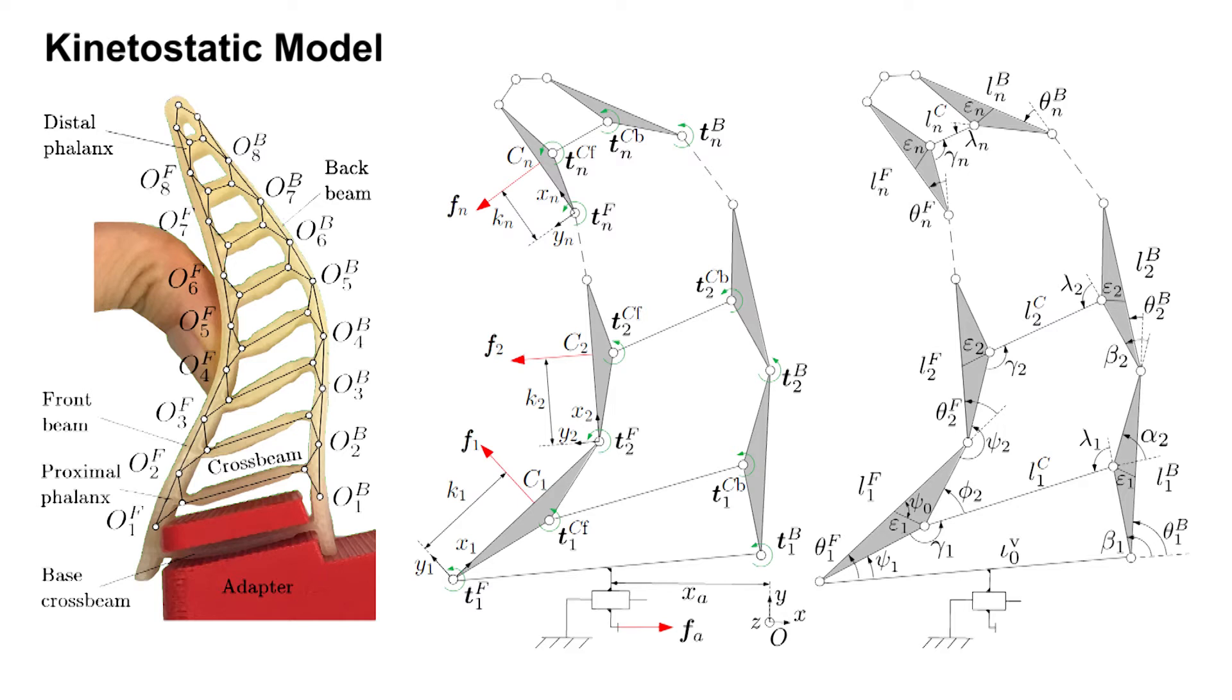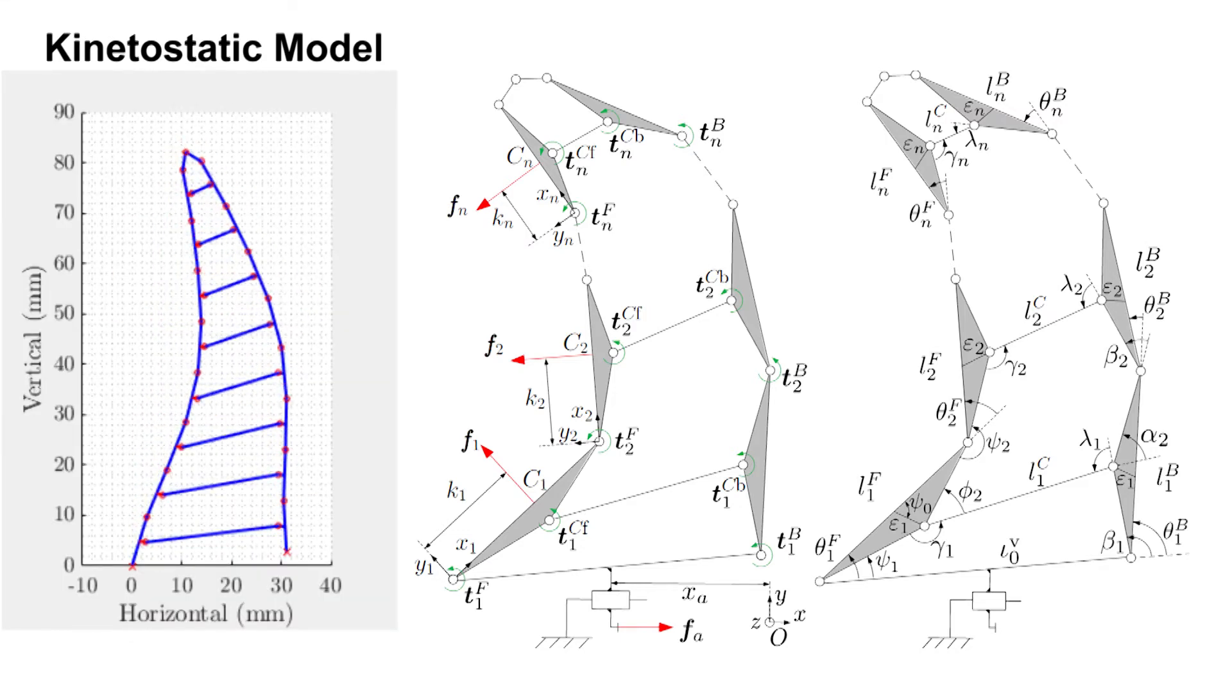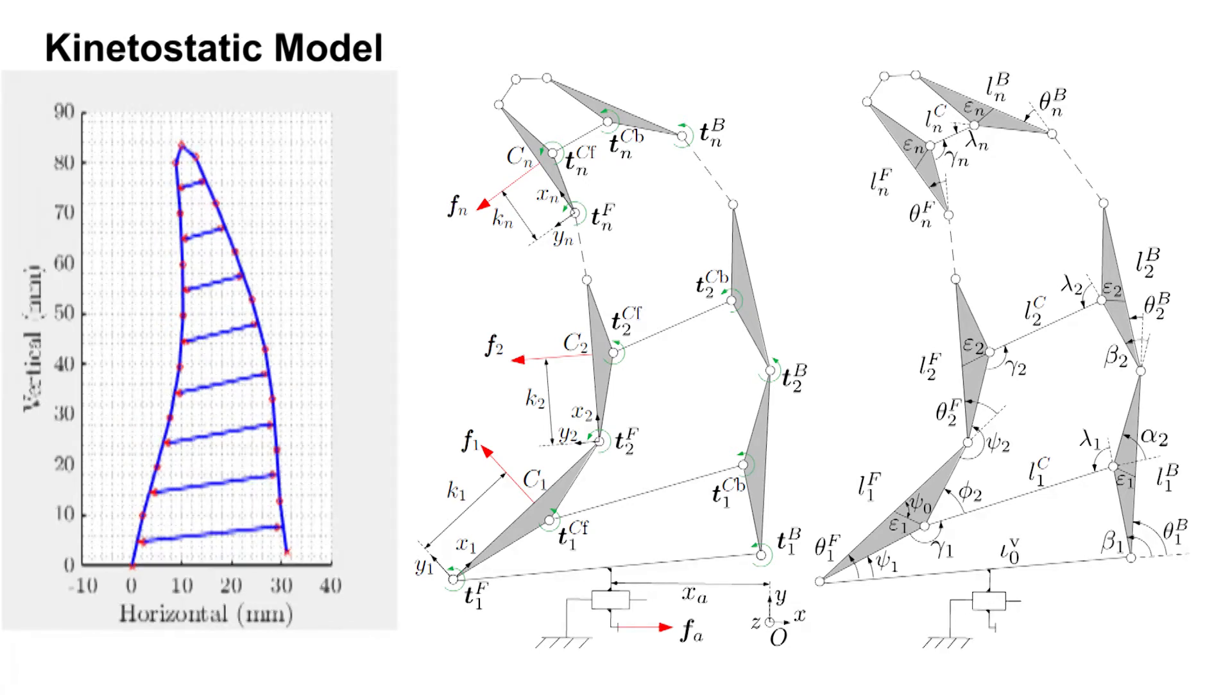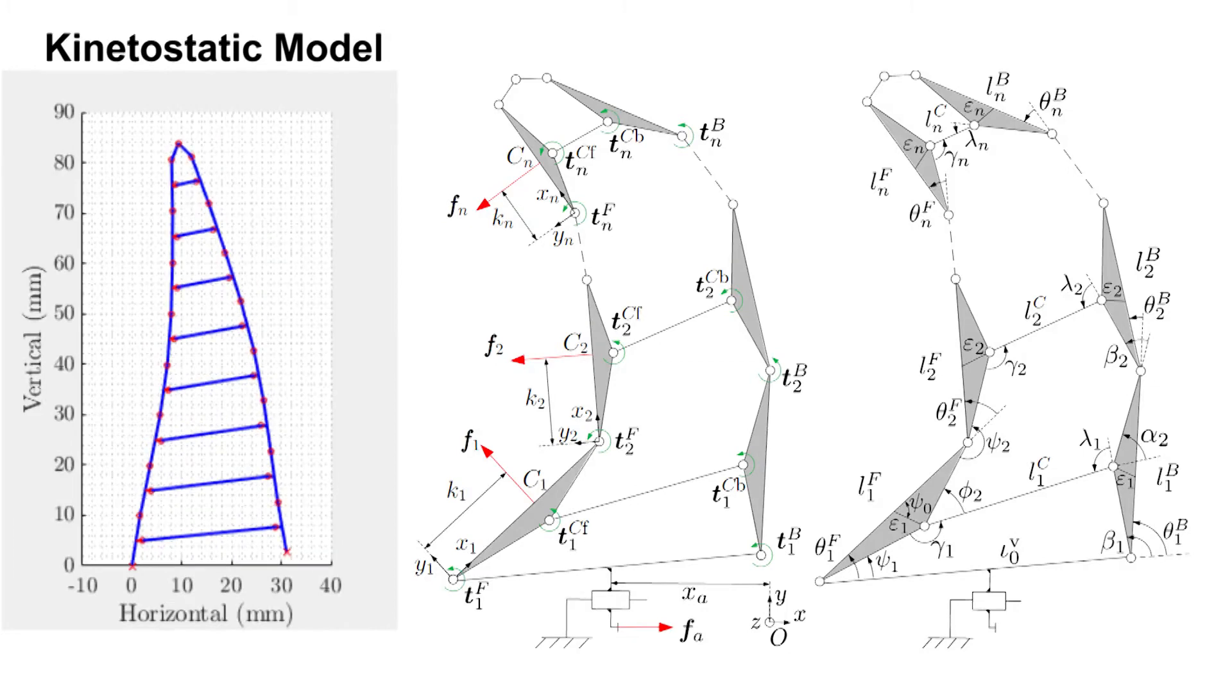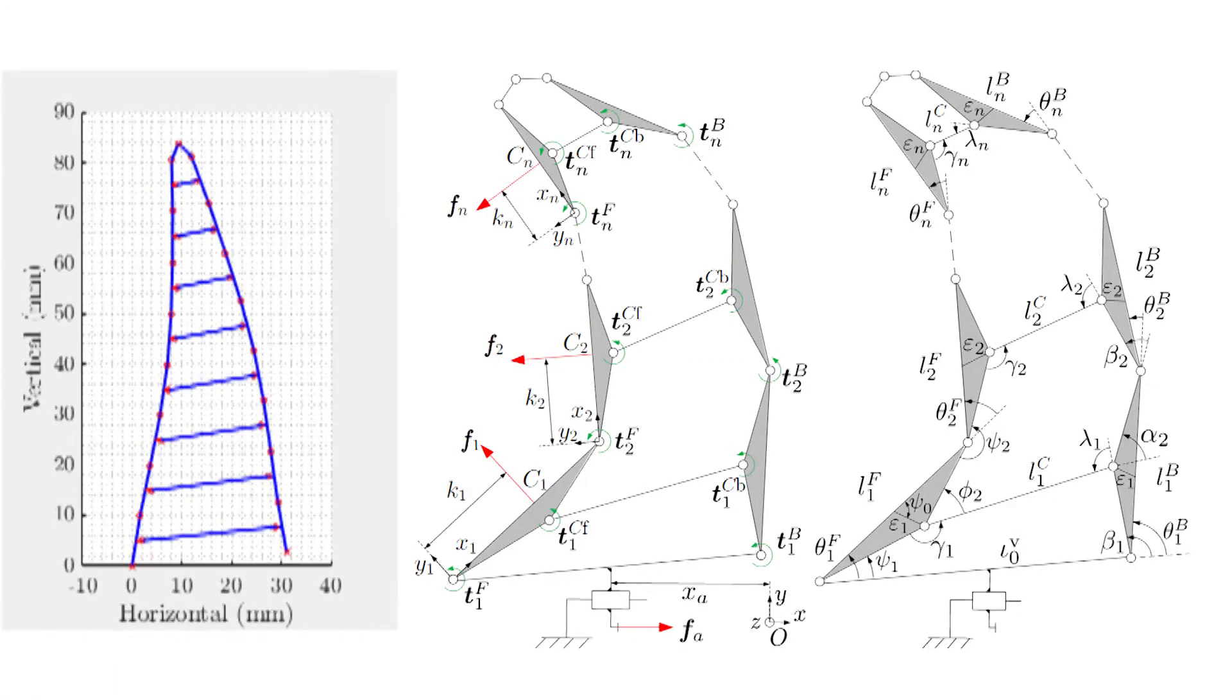The geometry of the equivalent linkage can be readily found by inspection, and the typical simulated deformations are consistent with the experimental results. However, obtaining accurate stiffnesses for this lumped model and thus being able to predict the grasp forces proved to be more challenging.